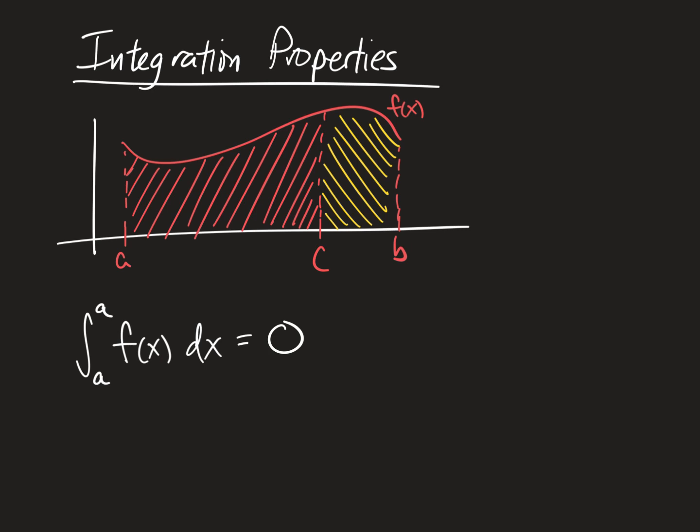Next bit of integration property to understand is that the bounds of integration, or the limits of integration, we like those limits of integration to move left to right or from bottom to top. So if I start at A and move to B, I am moving left to right. But you can also move left. You're allowed to move left. So I can write this integral here with these limits of integration swapped. But when that happens, you end up with the opposite answer. So when you swap the limits of integration, the sign will change.